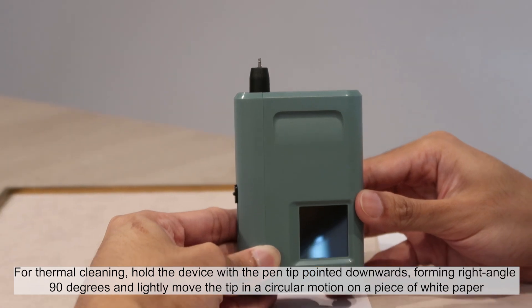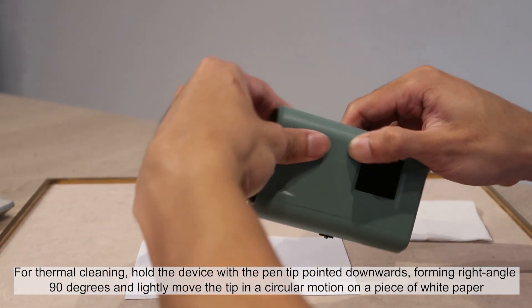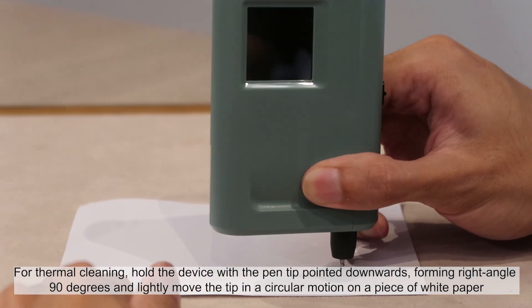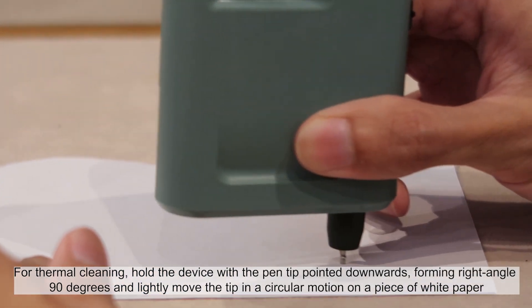For thermal cleaning, hold the device with the pen tip pointed downwards, forming a right angle 90 degrees, and lightly move the tip in a circular motion on a piece of white paper.